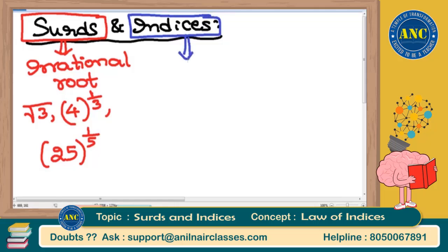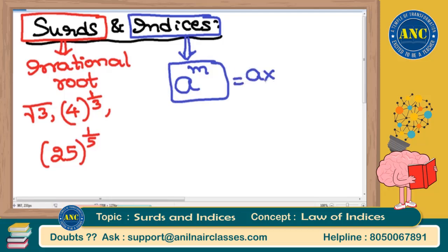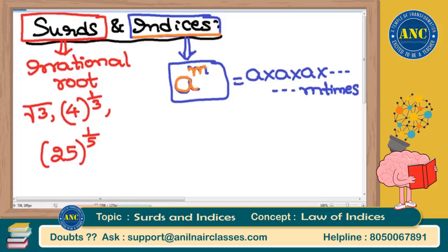The meaning of indices relates to the power you are raising a base to. Suppose there is a base called 'a' and a power 'm' — then a to the power m means 'a' multiplied by itself m times. Instead of writing a multiplied m times, you can express it in terms of indices as a to the power of m.